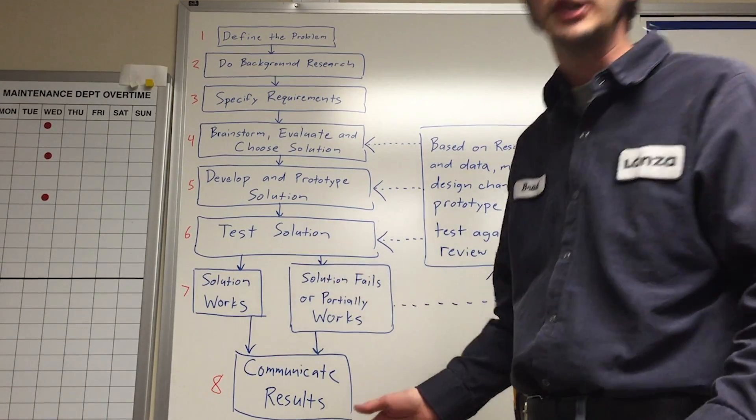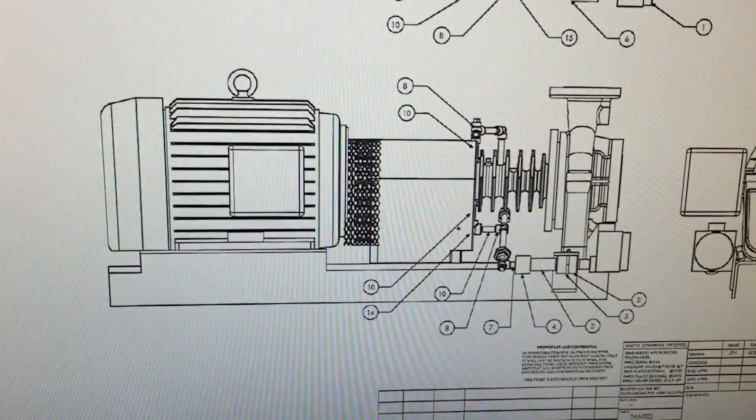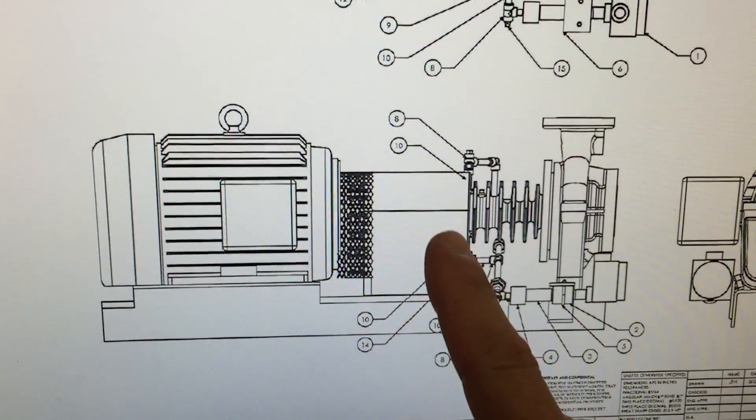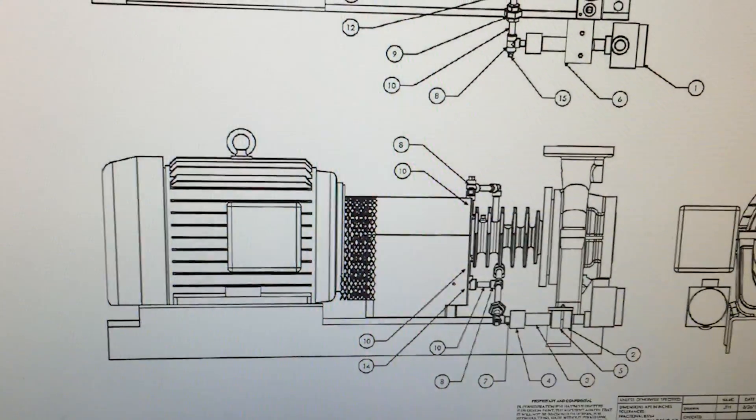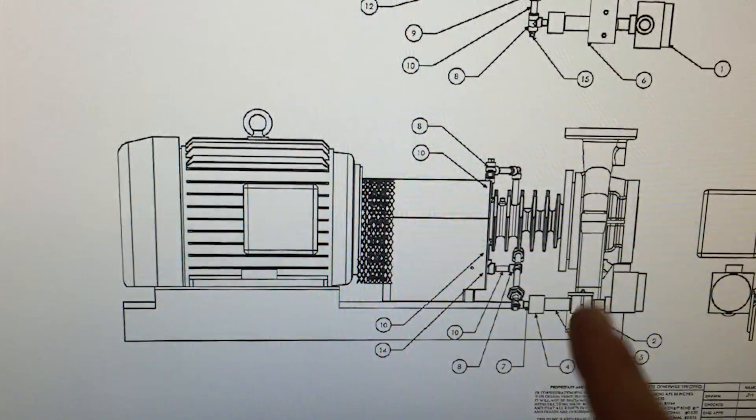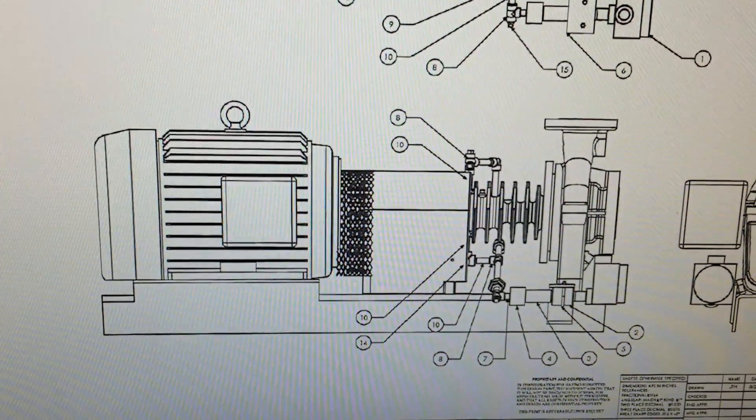So that's the general basis and general flowchart for problem solving I use. Now let's take a look at an actual example. Here's our example problem. We have these particular pumps and we put these leak detection systems on the pump mechanical seal housing. Mechanical seal being the device that holds the process fluid into the pump as it operates. We never had issues before, but ever since we put these in, the seals leaked all the time, which is rather unusual.